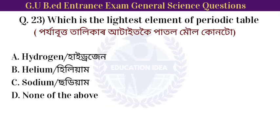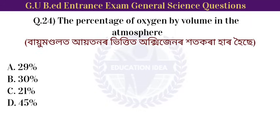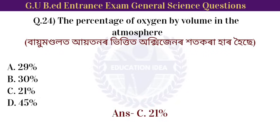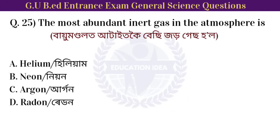Next question: which is the lightest element of the periodic table? Option: hydrogen. Hydrogen is the lightest element of the periodic table. The most abundant gas in the atmosphere is argon.